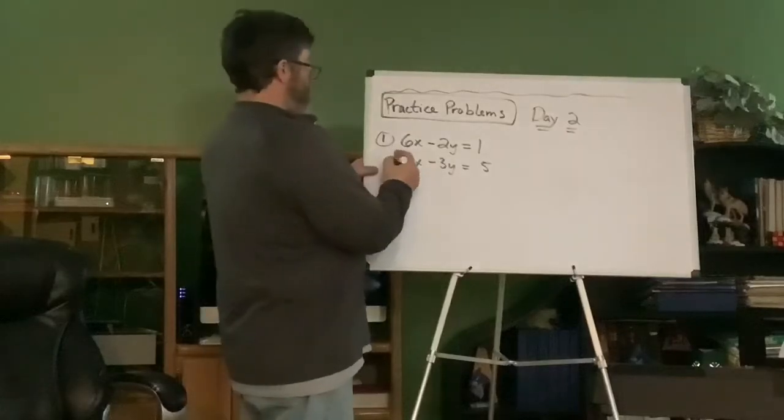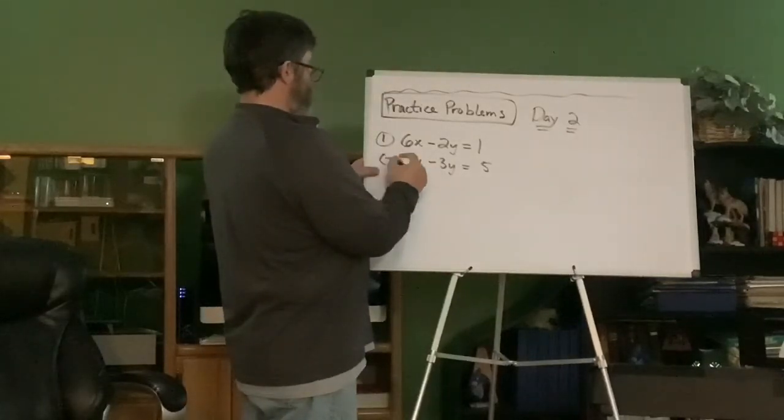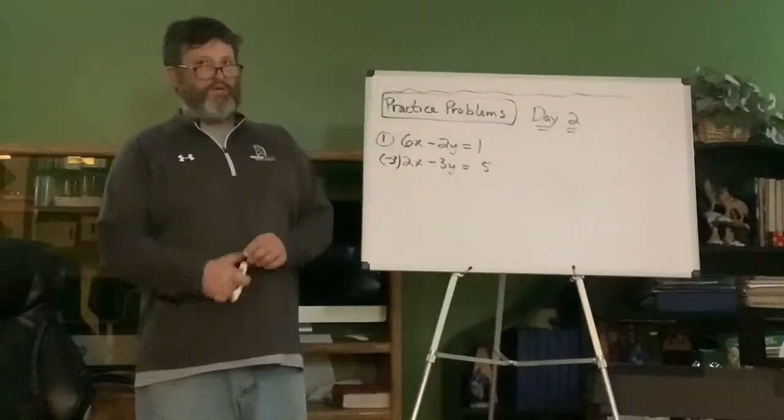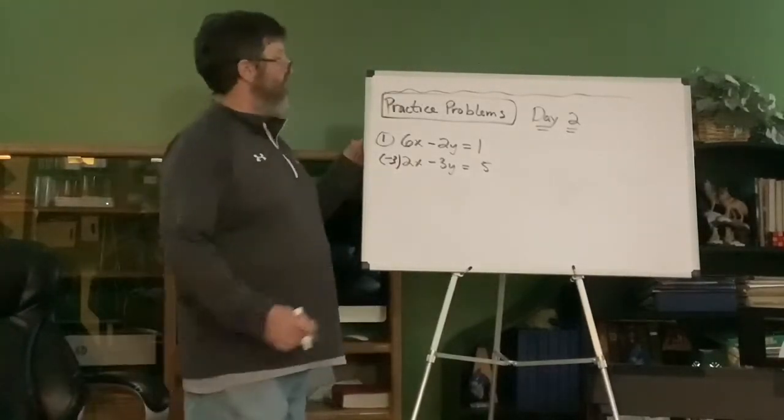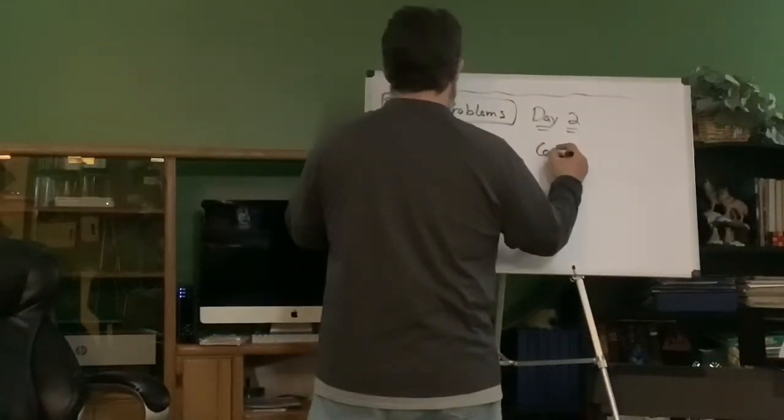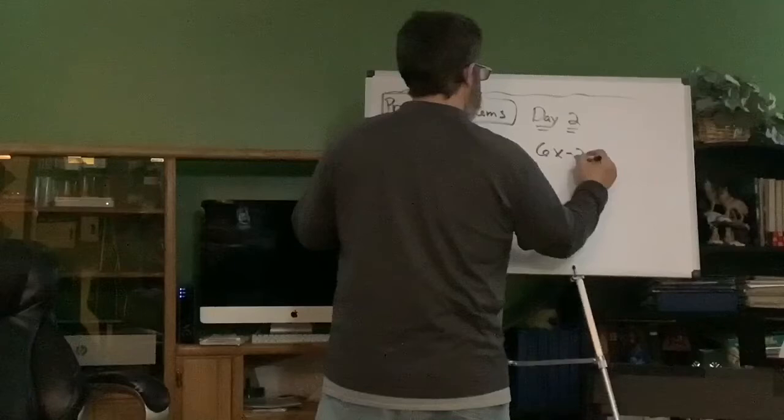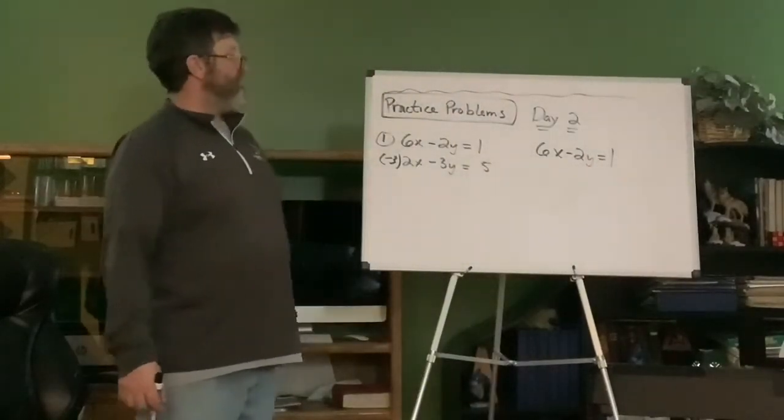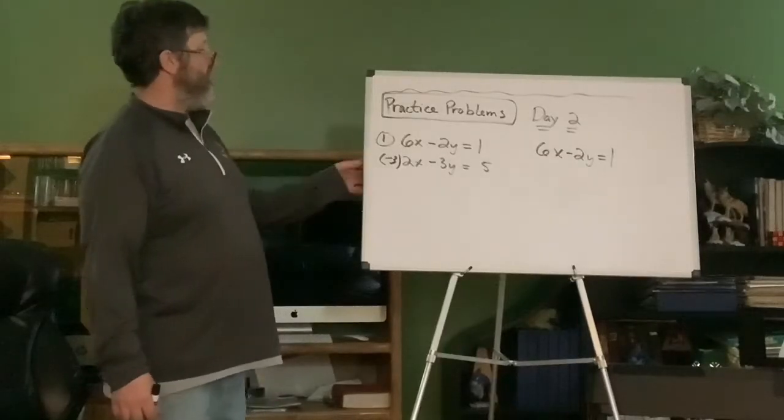So, what am I going to do? I'm going to multiply this bottom equation by three, okay? All right, not going to mess with the top equation at all, but I am going to rewrite it over here. Be writing this down with me. Six x minus two y equals one. If you're having a hard time keeping up, just push pause and get each step with me.